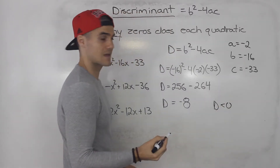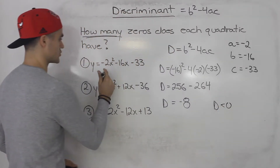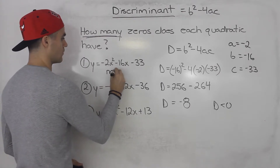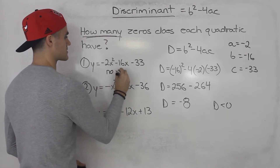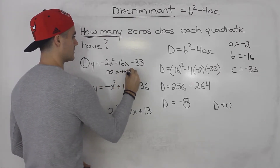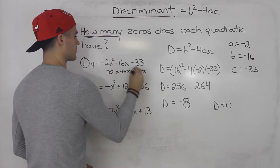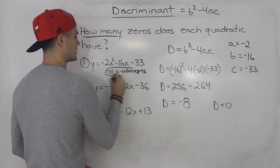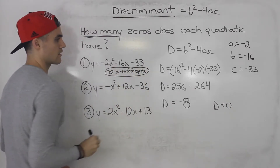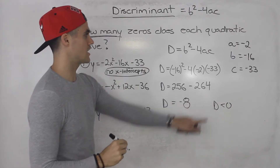Since the discriminant is negative 8, which is less than zero, this quadratic has no x-intercepts. When the discriminant is less than zero, there are no x-intercepts.